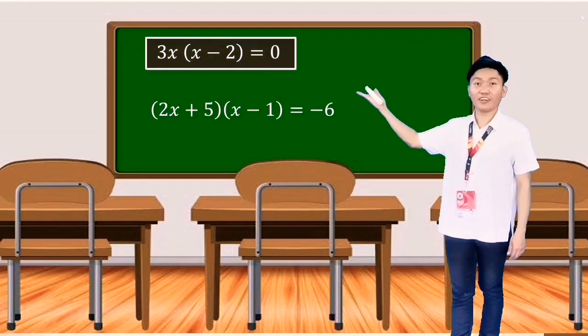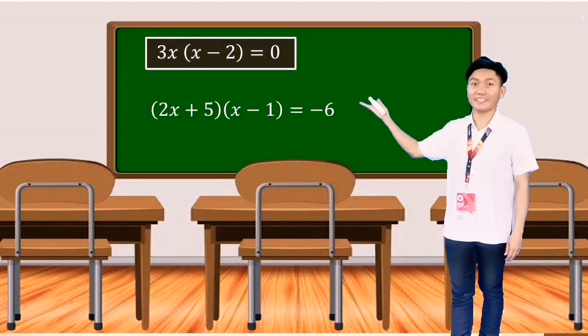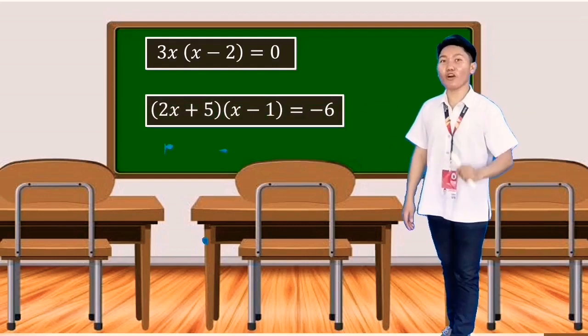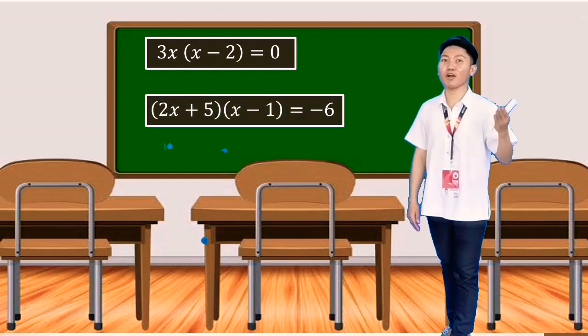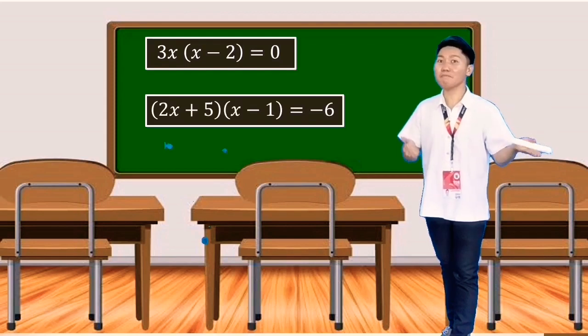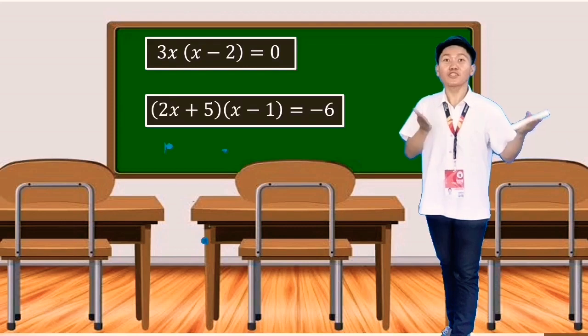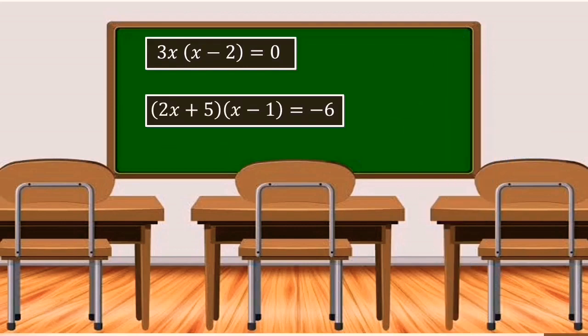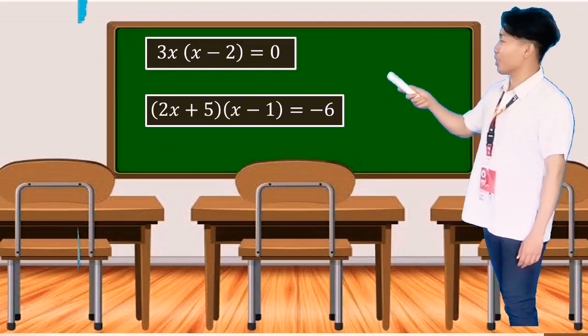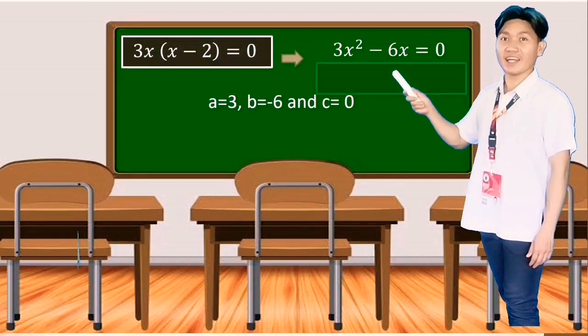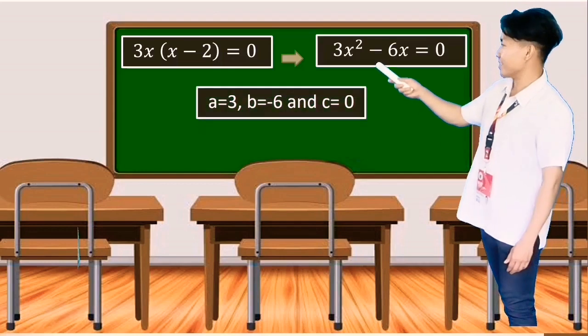Here is another example of a quadratic equation but it is not written in standard form. All you have to do is apply your understanding and the concept about multiplying monomial and binomials. And don't forget to equate it with 0 so that the equation will be complete. And here is now the standard equation. Then we will identify the values of a, b, and c from the standard equation. So here it is.